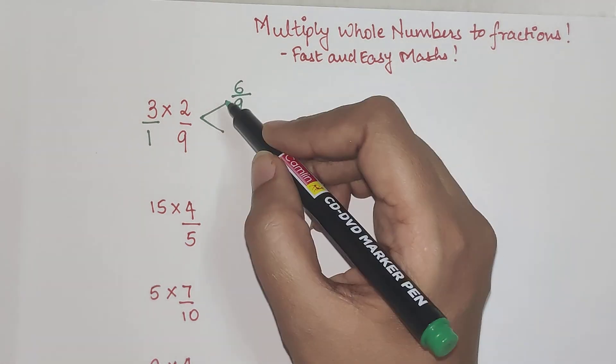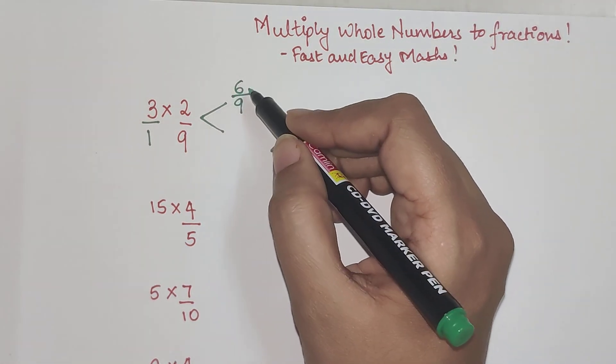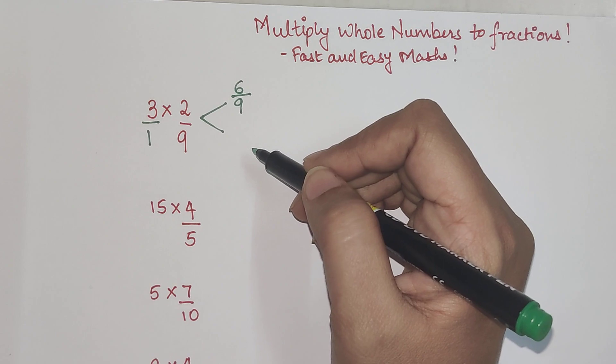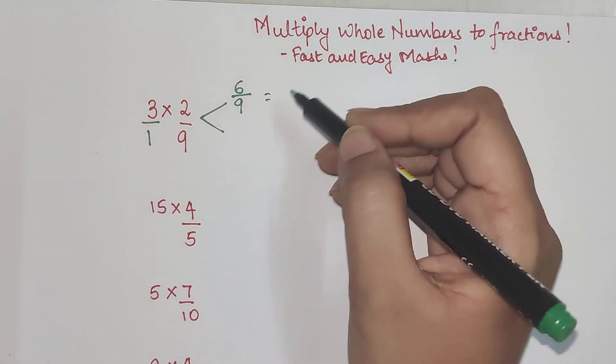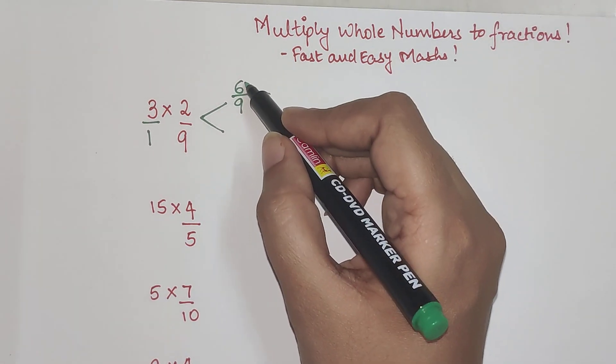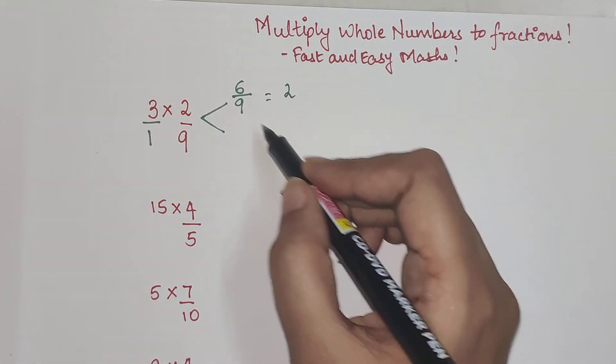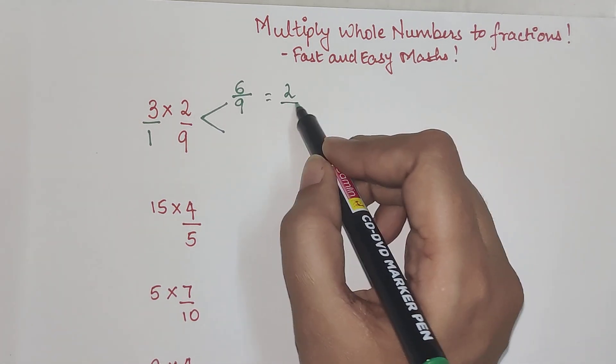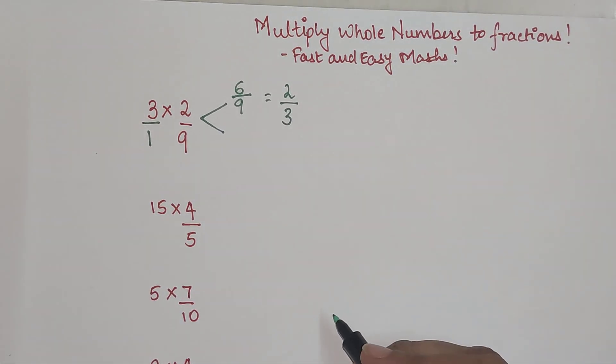So 3 into 2 gets you 6 and in the denominator you will have 1 into 9 which is going to be 9. Now if you look closely you can reduce this further because both of them are divisible by 3. So this you can divide 6 by 3 you will get 2. Similarly 9 by 3 you will get 3.